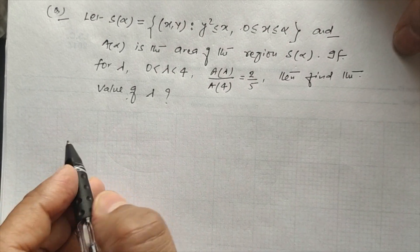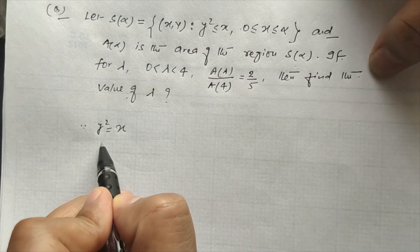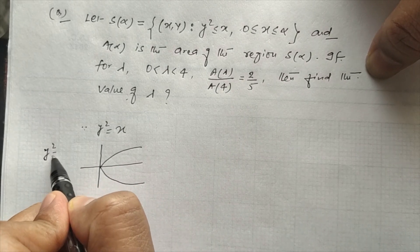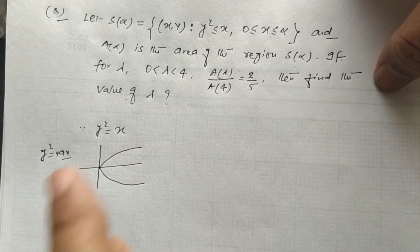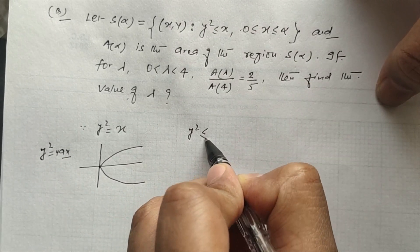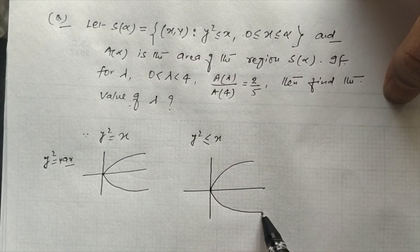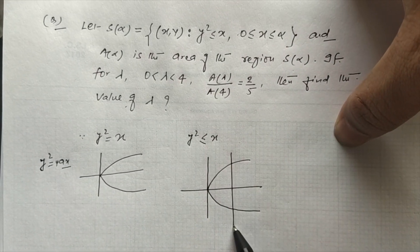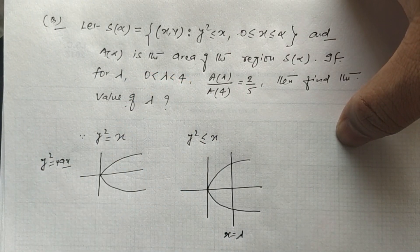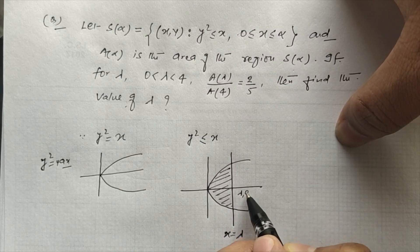First, note that y² = x is a parabola. The graph has the nature of y² = 4ax. The region y² ≤ x is the shaded region inside the parabola. We take a line x = λ, where λ varies from 0 to 4. The relevant coordinates are (0,0) and (λ, 0), defining the shaded area.